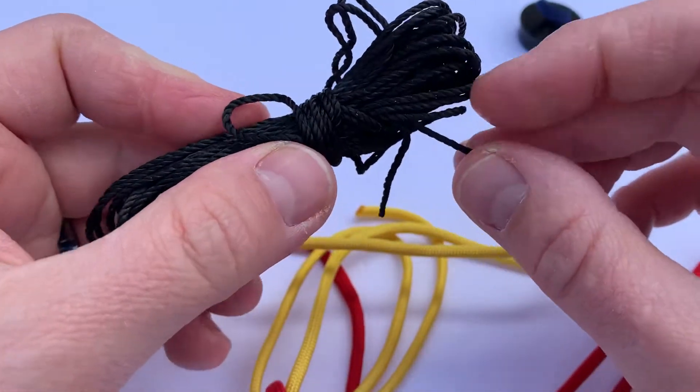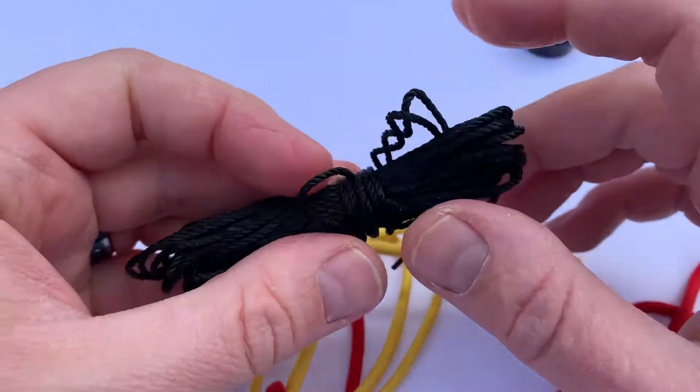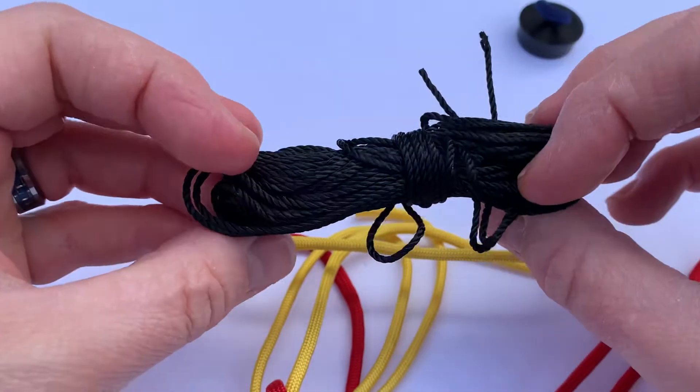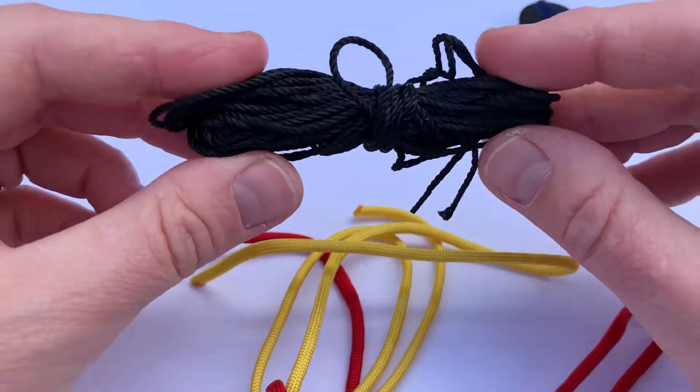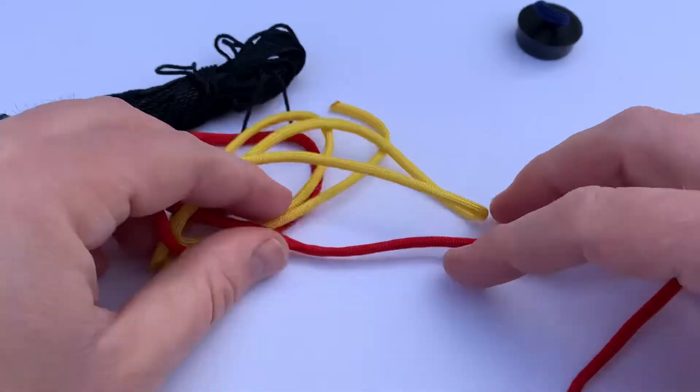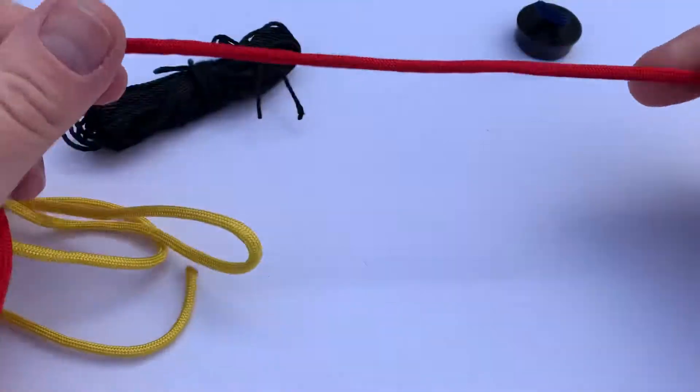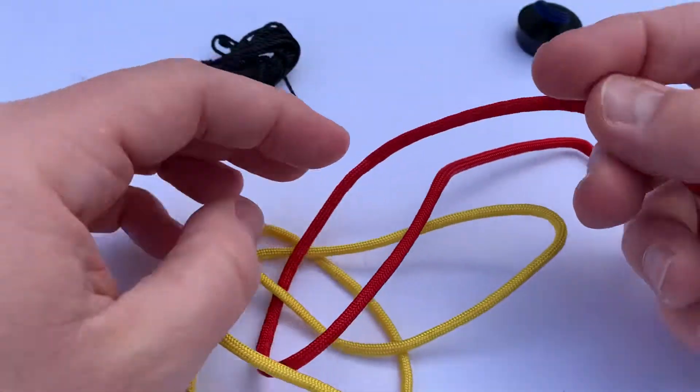it's gonna hold up for most of your knots and knot tying that you're gonna need out there. So there's 20 feet of bank line and then there's also a couple short strands of paracord.